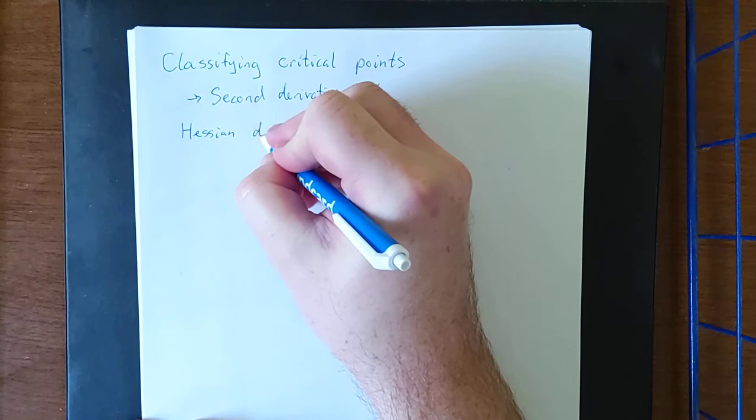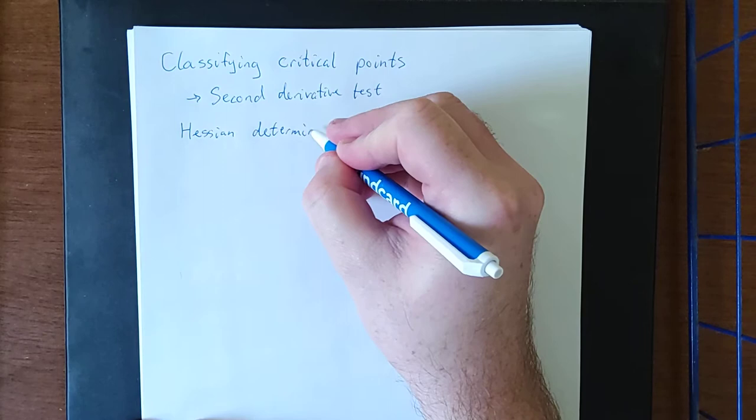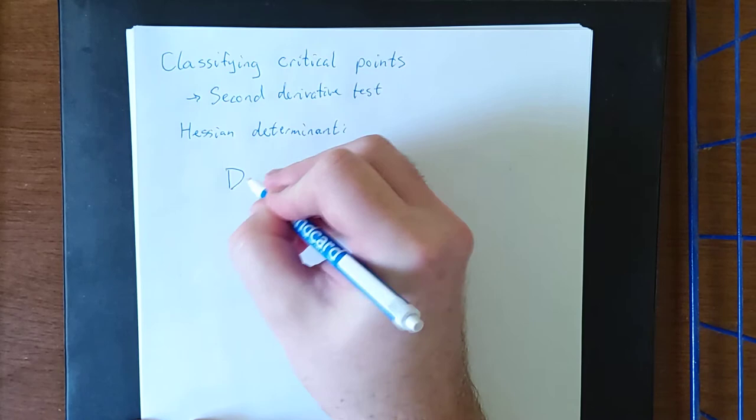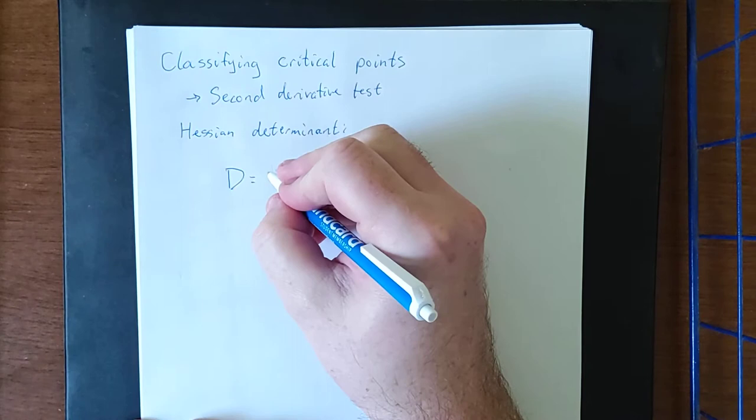Now because we have so many directions from which we can approach a point, the Hessian determinant is the quantity that we're going to use to describe this situation. It is also known as simply the d. The d is referring to a second derivative test of sorts.